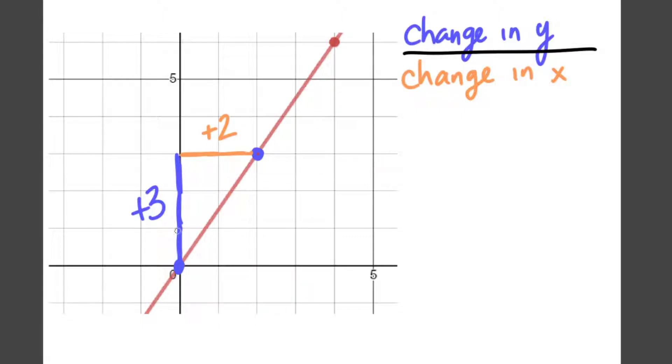So that changed by 2. Again, we're looking at how much did it change vertically and horizontally. And then those are combined into my ratio. So my change in y was 3 over my change in x, which was 2. So my final slope is 3 over 2.